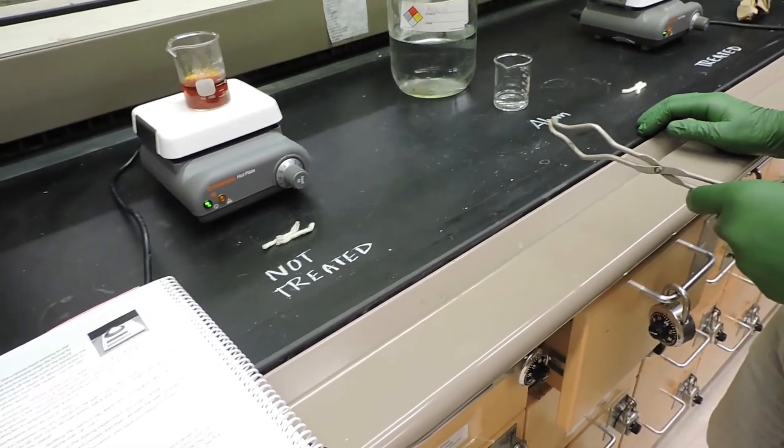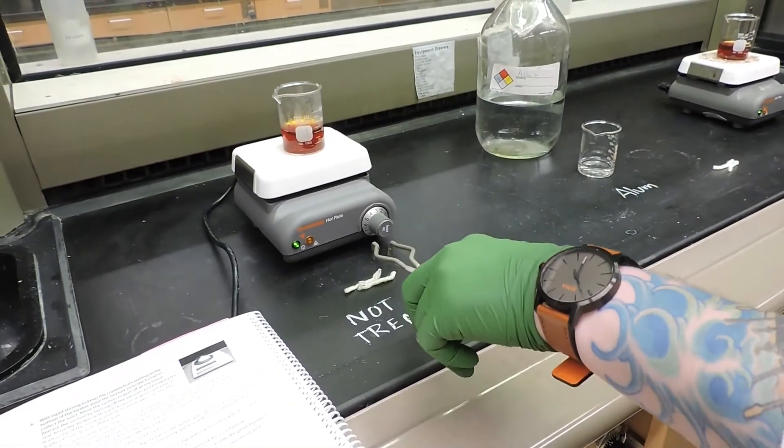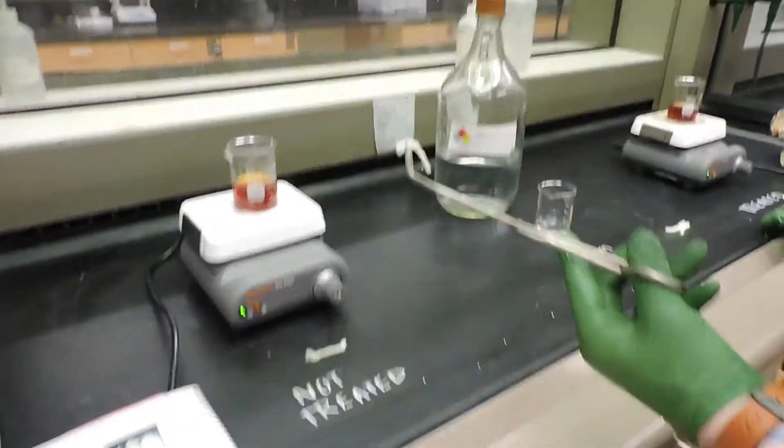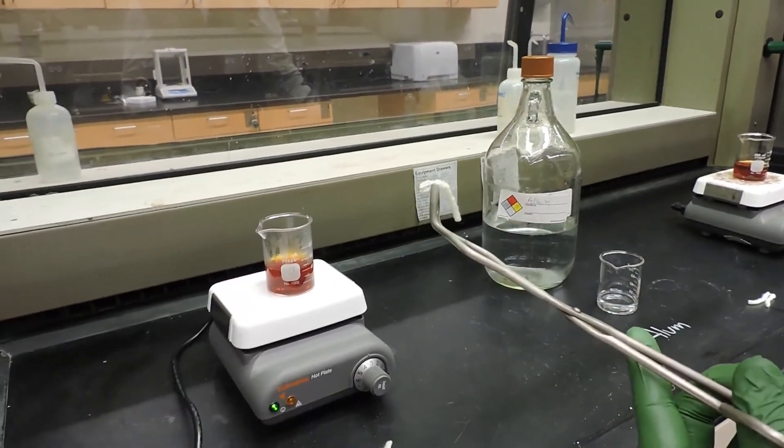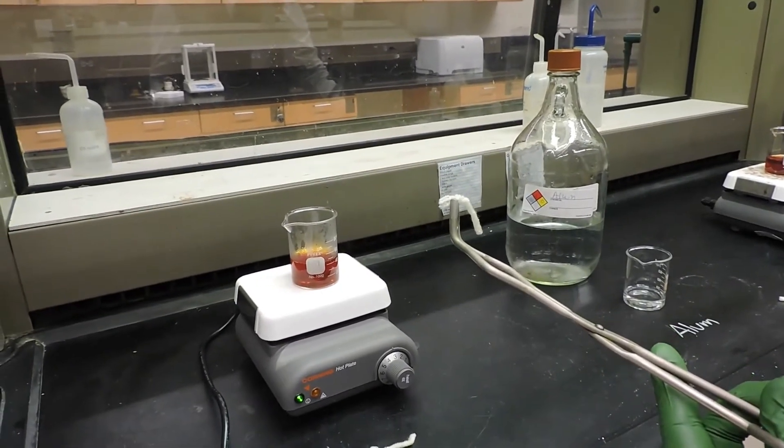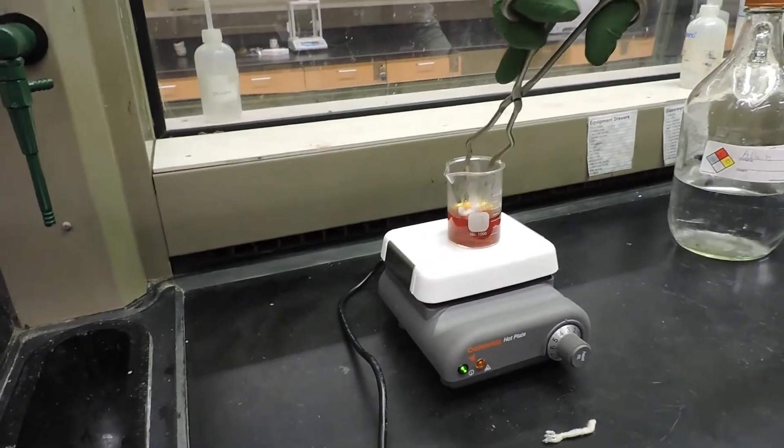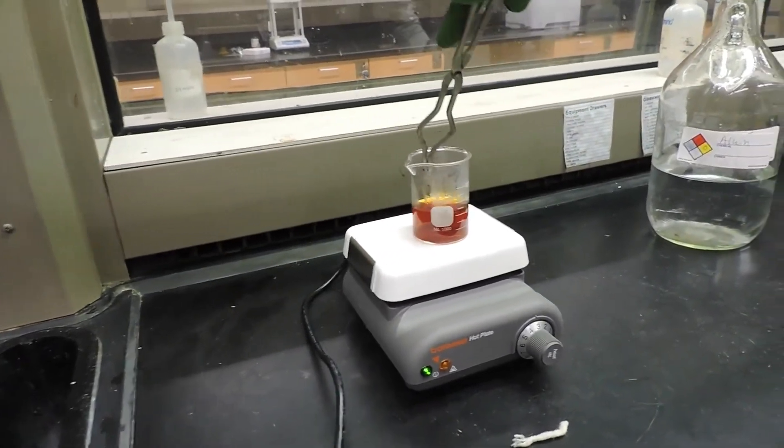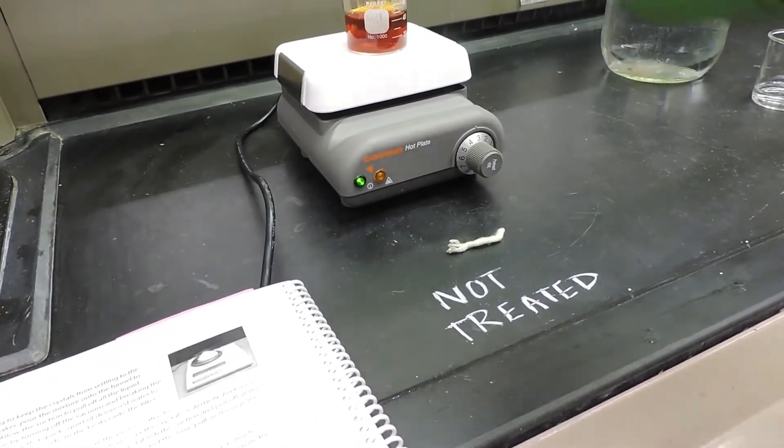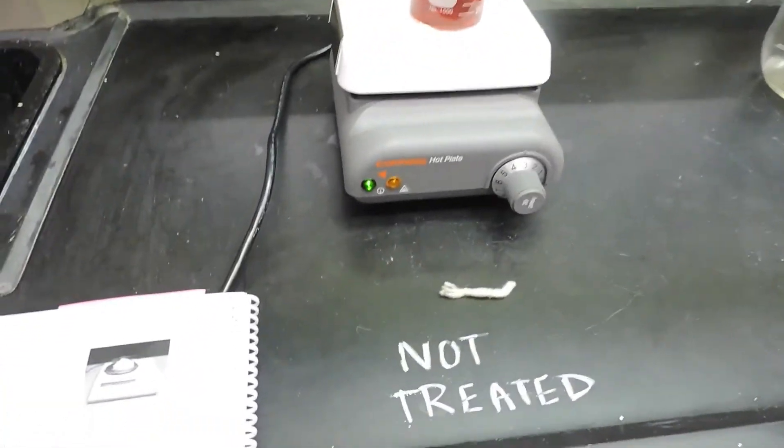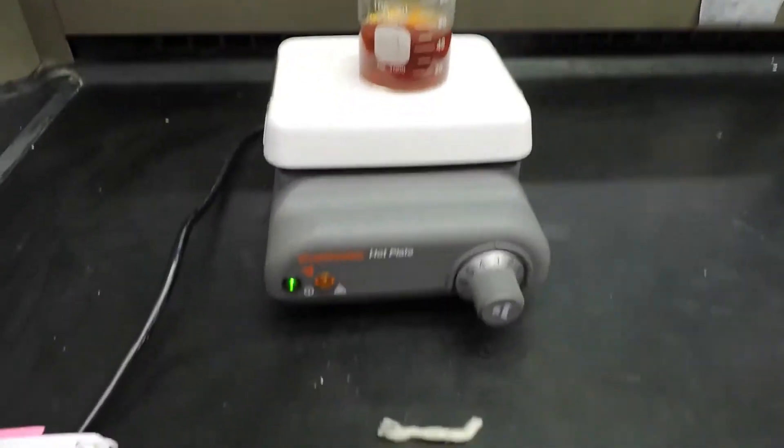So while we're waiting for our alum to crystallize, we're going to go ahead and do part C. So we've obtained two pieces of wool. And first we're going to soak one piece of wool in an alizarin bath for two minutes. And this is our non-treated bath. So this is just going to be the alizarin dye in our warm bath.